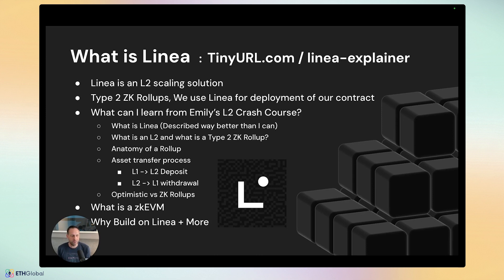Rollups are the most widely accepted L2 implementation. You have optimistic rollups like Arbitrum, Optimism, and Base, and ZK rollups like Linea, ZK Sync, Polygon ZK EVM, Scroll, and StarkNet. A ZK EVM — zero knowledge Ethereum virtual machine — executes smart contract transactions using existing Ethereum infrastructure in a way that ZK proofs can understand. The prover submits programs that translate into math, producing a Boolean true or false through arithmetization.